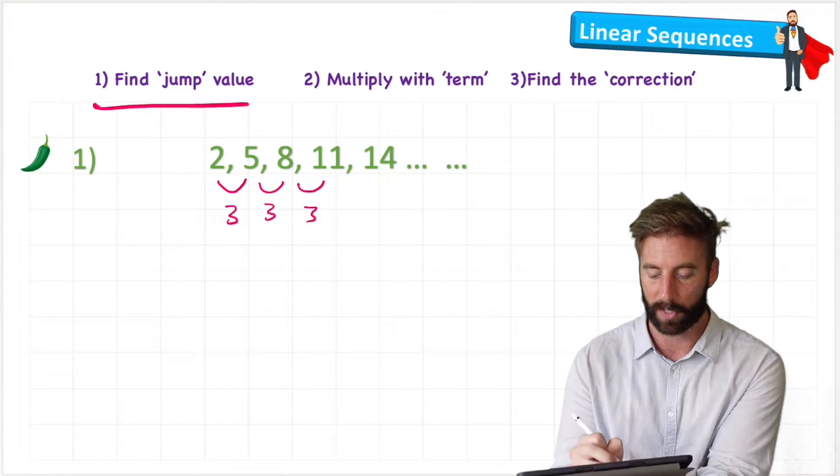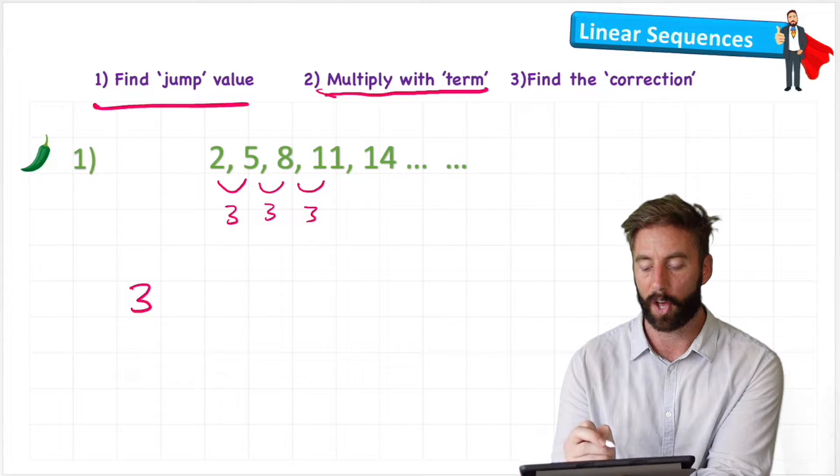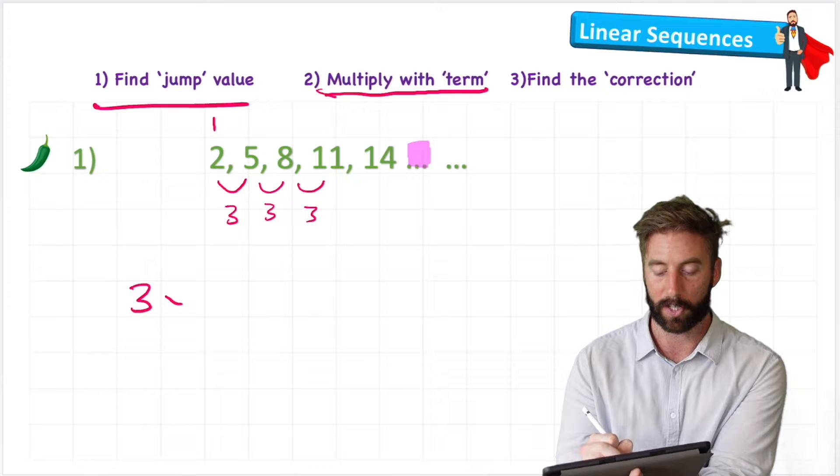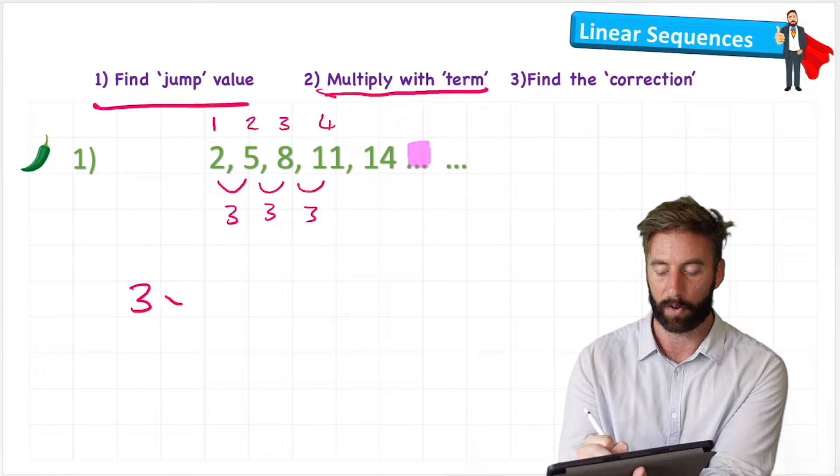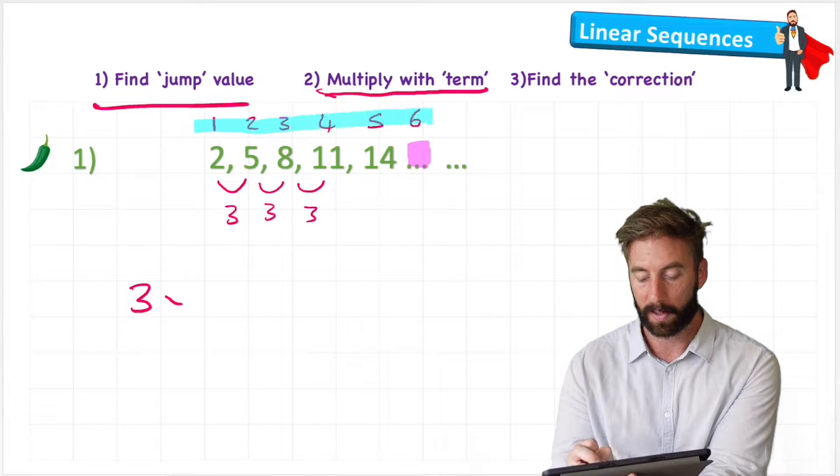And then it says to multiply with the term. So this will be my first term, my second, third, fourth, fifth, and then the one we're trying to find is sixth. And we call these numbers up here the terms.